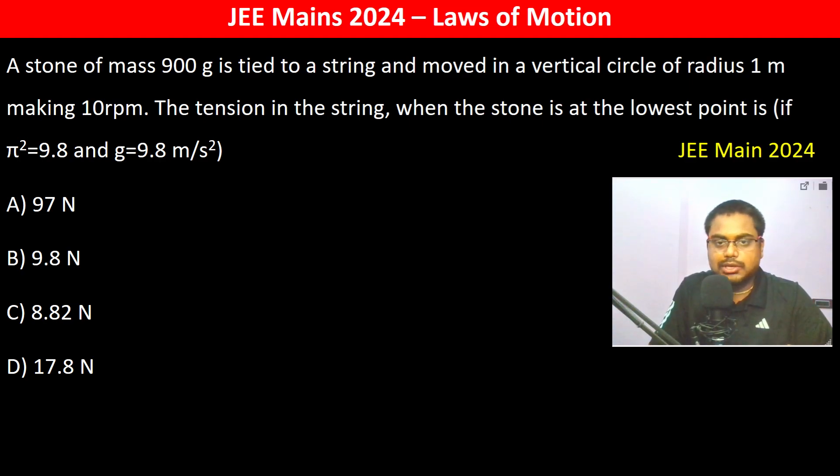A stone of mass 900 grams is tied to a string and moved in a vertical circle of radius 1 meter making 10 rpm. The tension in the string when the stone is at the lowest point.